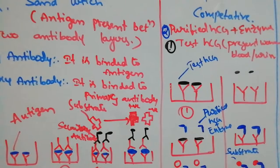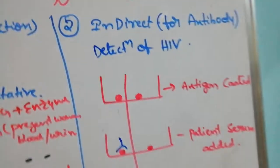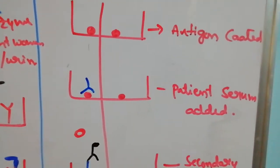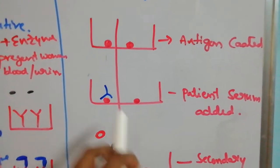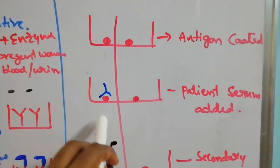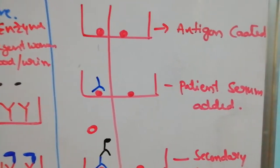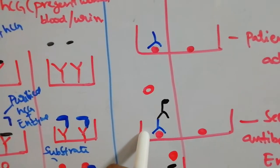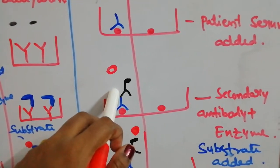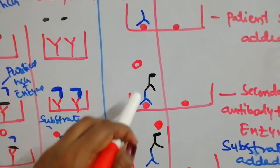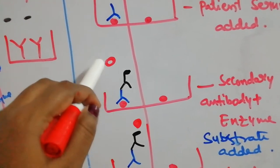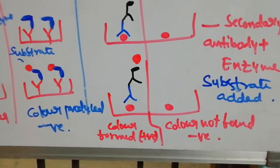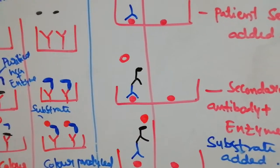Now coming to the indirect ELISA, which is used for detection of antibodies. In the first step, the plate is coated with a known HIV antigen. Then, serum from the suspected person is added. If positive, HIV antibodies are present and will bind; if negative, HIV antibodies are absent and will not bind. If bound, secondary antibody with enzyme is added along with substrate — color is produced, indicating positive for HIV. If no antibody is bound, no color will be found, indicating negative.